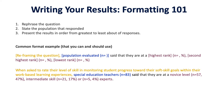So remember, we're talking about Likert questions here, so we're always ranking them. A common format example would be: reframe the question and then talk about the population evaluated. For example: 'When asked to rate their level of skill in monitoring student progress toward their soft skill goals within their work-based learning experiences, special education teachers (N = 83) said that they are at novice level (N = 57 or 47%), followed by intermediate (N = 21 or 17%), or expert (N = 5 or 4%).'